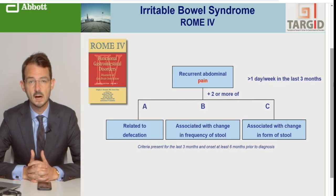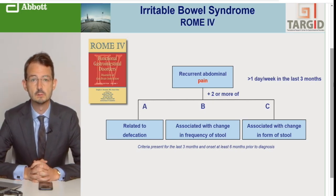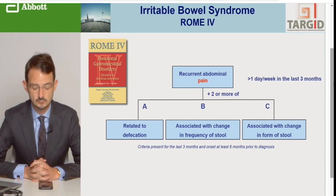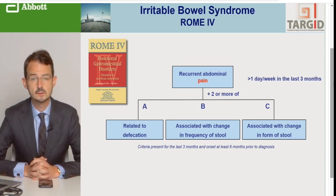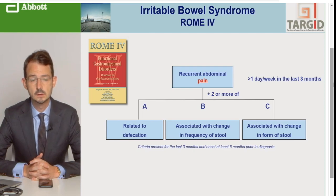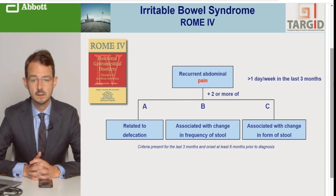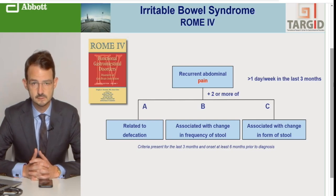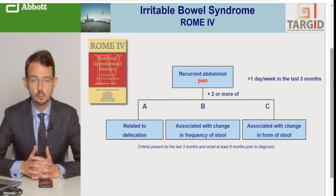Để bắt đầu, chúng ta sẽ bắt đầu với lưu trình để chẩn đoán hội chứng IBS. Tại vì chưa có những chỉ điểm sinh học, cho nên chúng ta phải dựa trên các triệu chứng lâm sàng. Và điều này đã được tích hợp trong tiêu chuẩn Rome 4, là cái mẫu mới nhất và được công bố vào năm 2016. Những triệu chứng chính trong tiêu chuẩn Rome 4 đó là đau bụng tái đi tái lại.